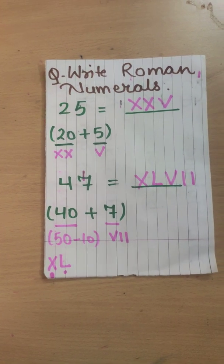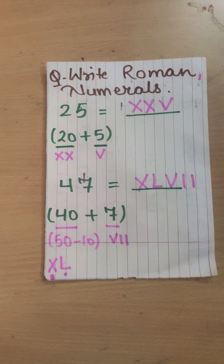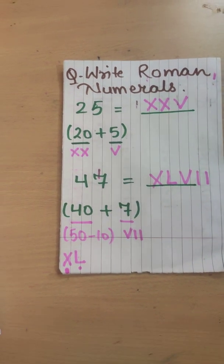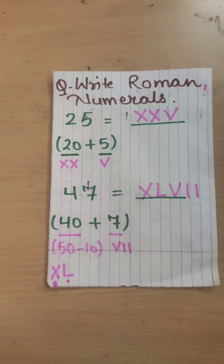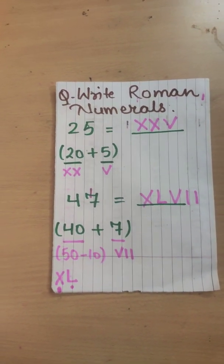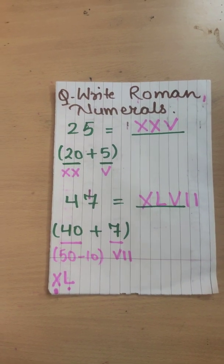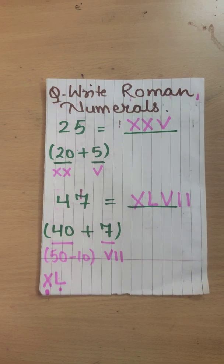20 plus 5. Let's write 20 first of all. 20 is written as 10 plus 10 with the help of our symbol. 10 plus 10 means XX. X plus X means XX. And plus. Plus denotes it's in right side. 5 means V. So XXV. This will be the answer of 25.